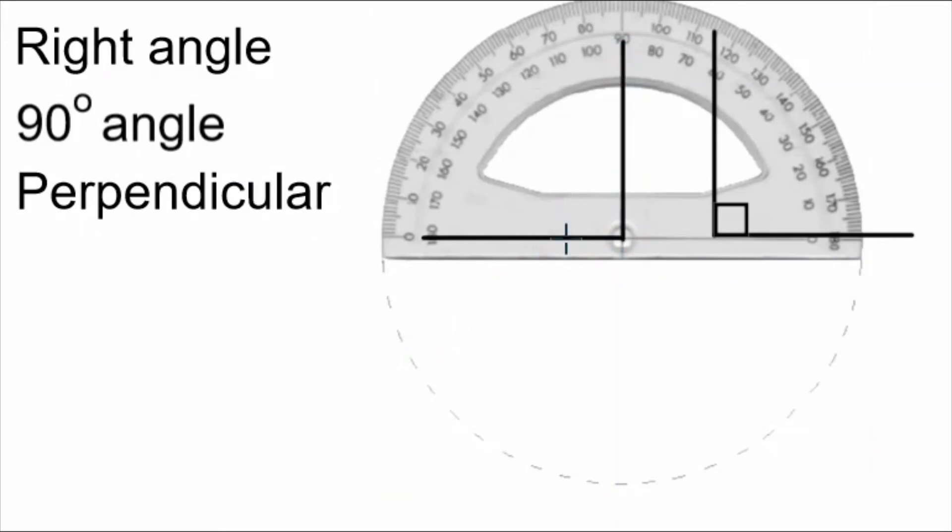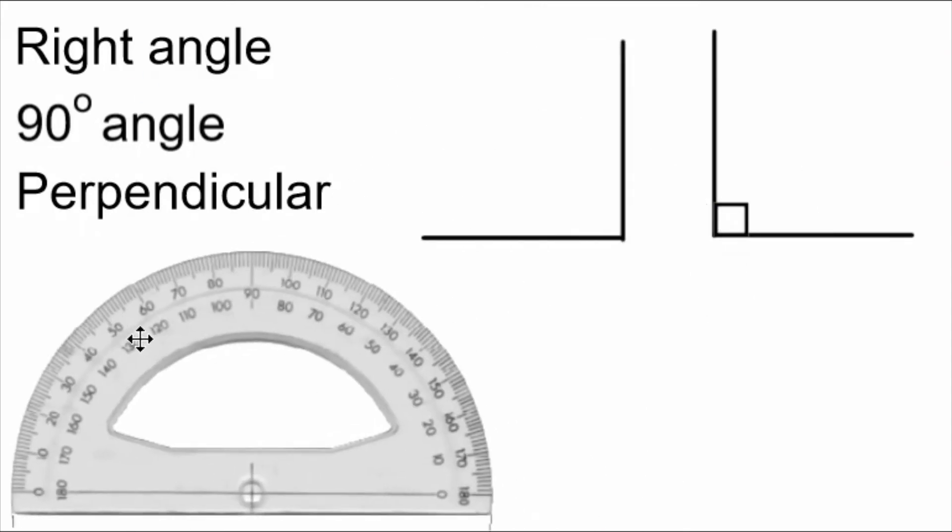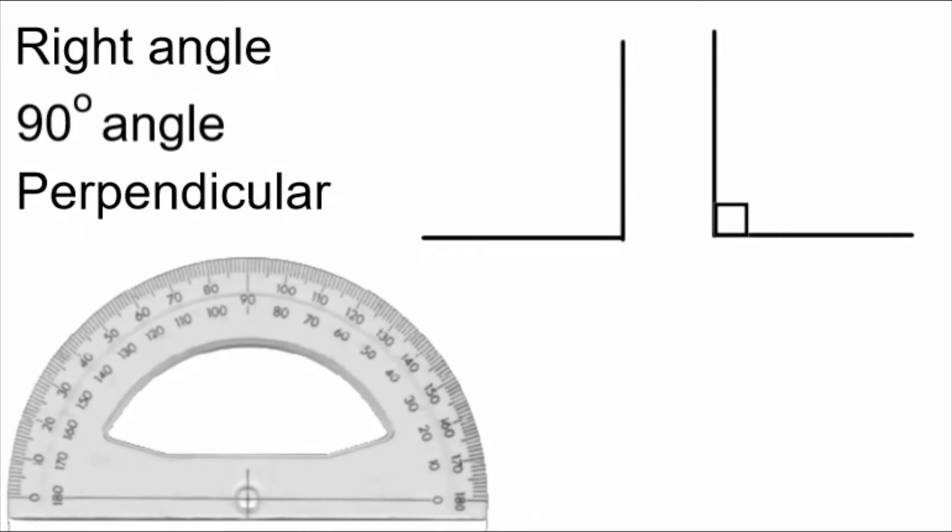I draw my line up to that point that I know is 90 degrees. Now I can move the protractor out of the way. And I'll put my symbol in to show that what I have is a 90 degree angle.